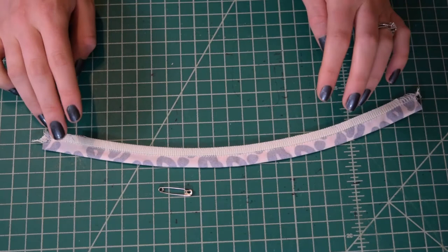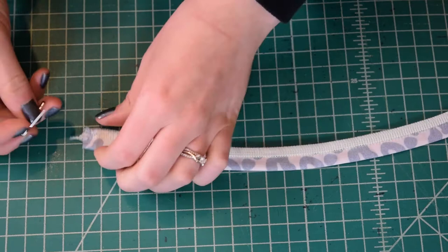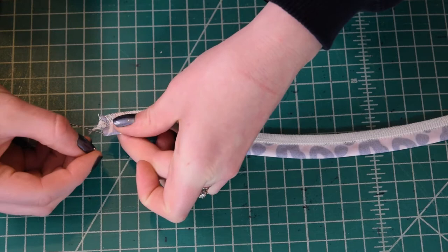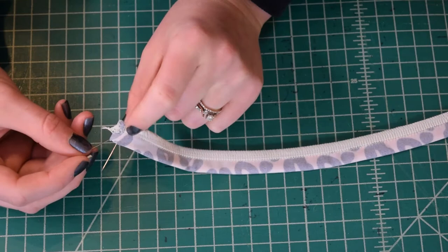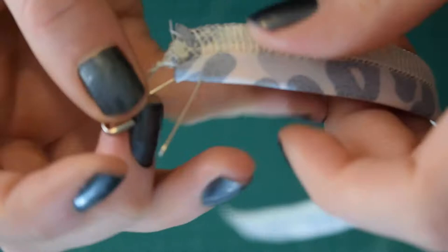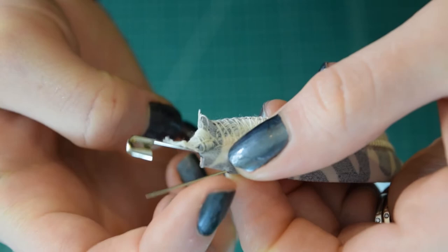So the first thing you want to do is open up your safety pin and then insert it into the fabric tube and grab just one side of the fabric. It doesn't matter what side you grab. So I've just put it through this side here. So then I'm going to secure the safety pin.